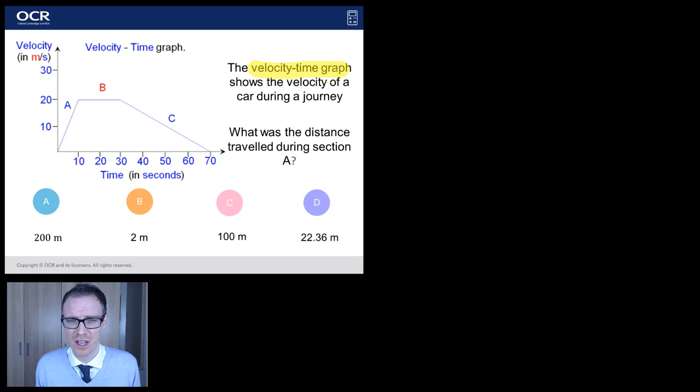The velocity time graph shows the velocity of a car during a journey. What was the distance travelled during section A?